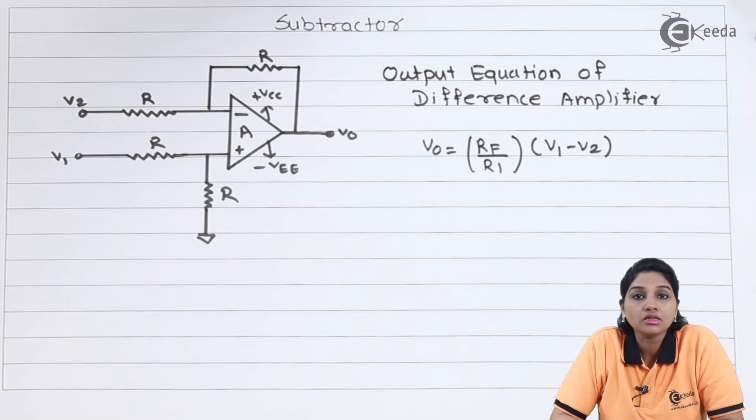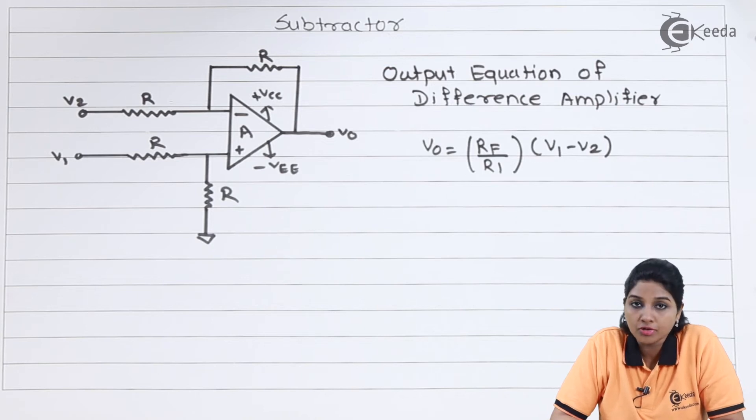Here, RF by R1 is considered as gain of the inverting amplifier and negative sign indicates that the input is applied to the inverting terminal of the op-amp.